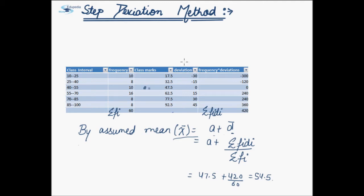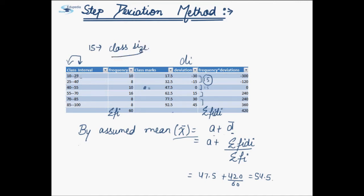If we look at this deviation column that is di, we can see that all the terms in this column are varying with a certain value. That is, minus 30 when added with 15 will give minus 15. When we add 15 to minus 15 we will get 0. Again on adding 15 we will get 15 and then subsequent terms. So here, 15 is in fact the class size, that is upper limit minus lower limit.